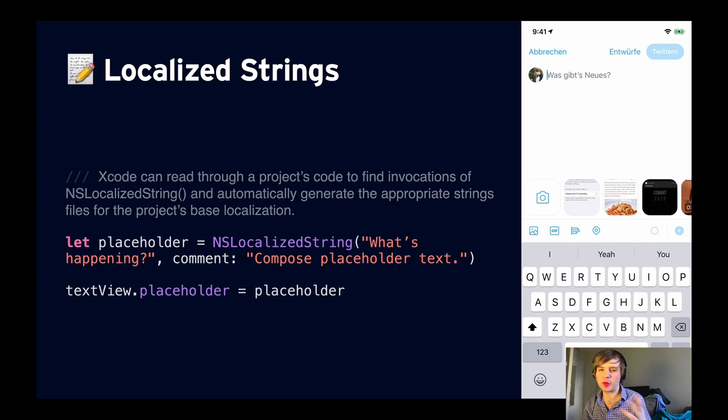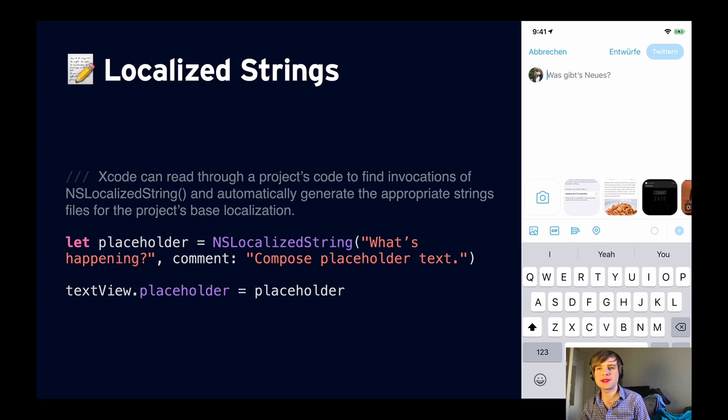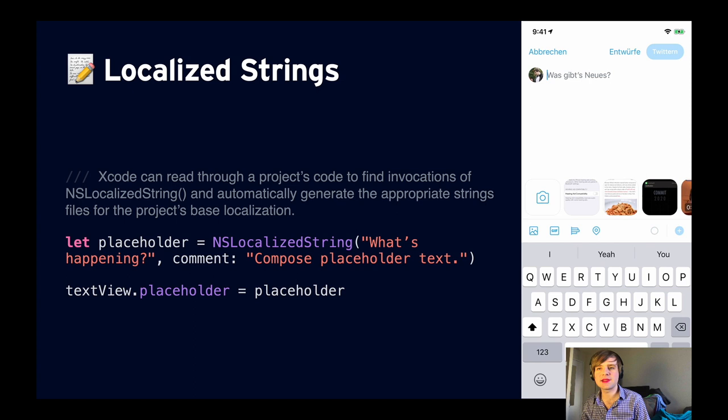To implement localization, use `NSLocalizedString` — pass your string key and a comment, and Xcode will read through your project, find invocations of that function, and automatically generate a strings file or XLIFF file that you can send to your translators. They'll translate it, send it back, and you will have localized the strings in your app.